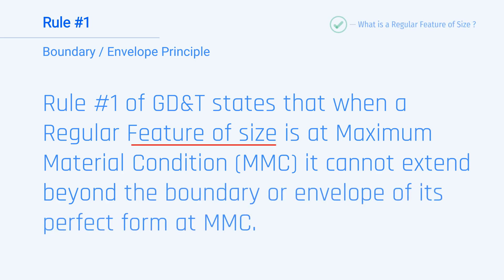We now know the aspects that make up this rule. Best of all, we know the hidden meaning. Rule one provides a shortcut for designers in that to ensure parts fit together, you only need to evaluate the feature's perfect form at its MMC size.